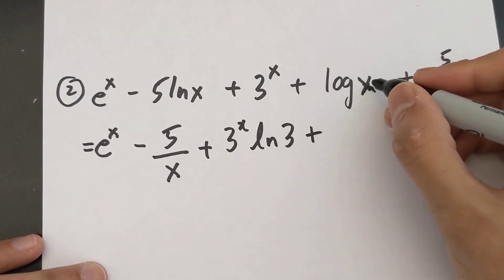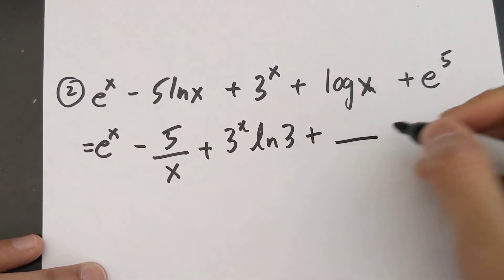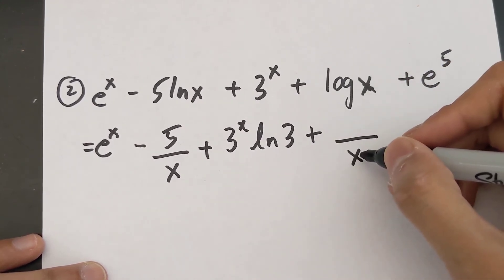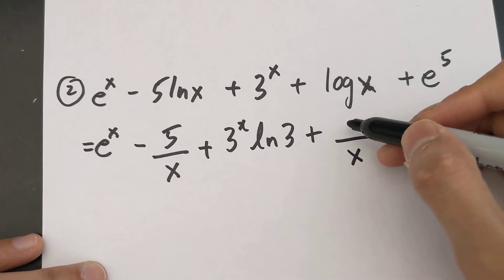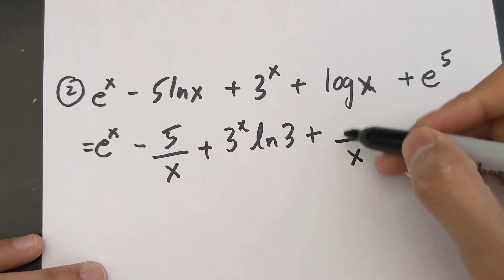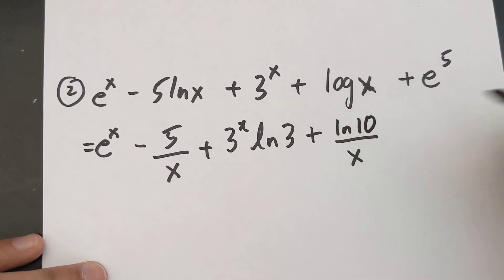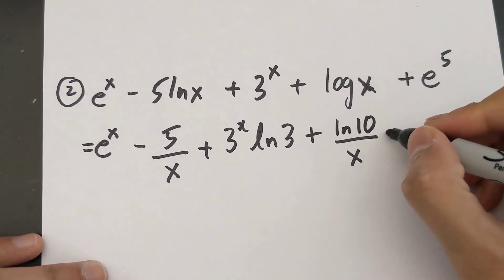The derivative of log x, well that's going to be over x for sure, because whatever's here moves down to the bottom. But you have to put the ln of the base up here, and the base, if it doesn't show any base here, it means that the base is 10. So I have ln 10 over x.